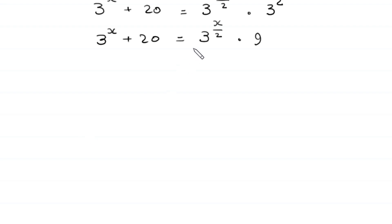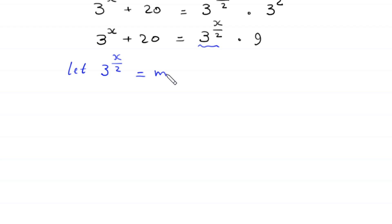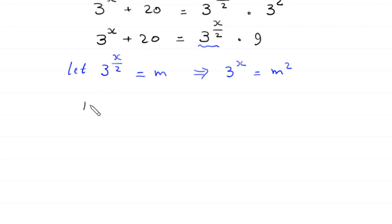Now we suppose that 3 to the power x over 2 is equal to m. If we square both sides of this equation, then 3 to the power x over 2 squared gives us 3 to the power x. So this equation will become m squared plus 20 is equal to 9 times m.